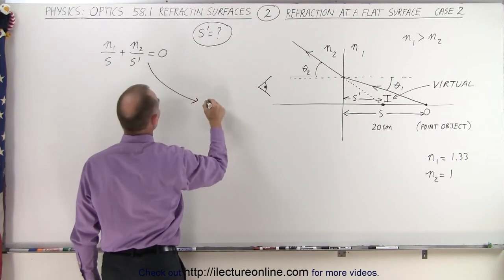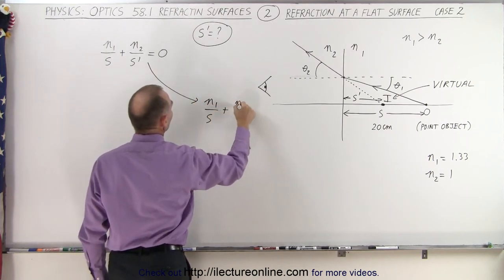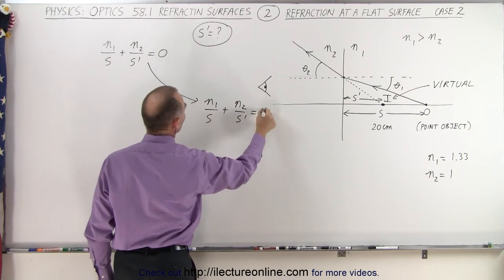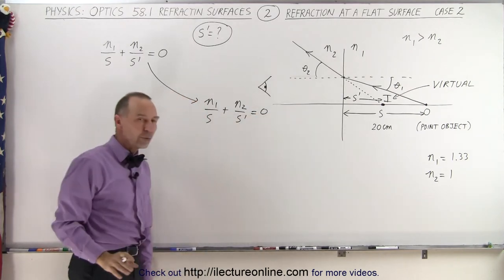So using this equation, we have N1 over S plus N2 over S' is equal to 0. Let's first solve the equation for S' before we plug in any numbers.